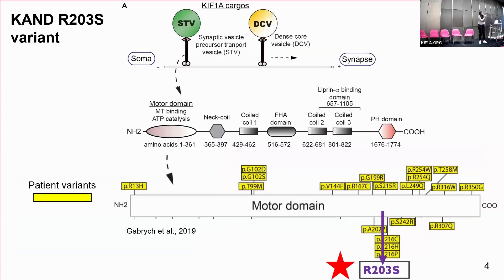So we're looking at the R203S variant. Walking through this diagram: at the top you can see kinesins bound to vesicles, which are the circles at the top, and microtubules on the bottom. In the middle of the diagram we have a flattened-out map of KIF1A and its different domains. At the bottom is a blown-up version of the motor domain, pointing out our variant's location — the R203S — which is within the motor domain and right outside of the ATPase catalytic core.